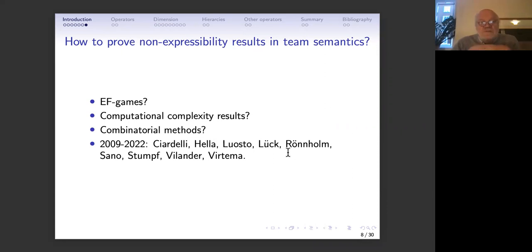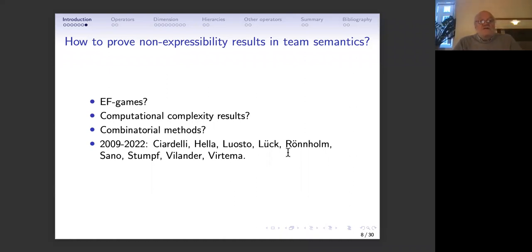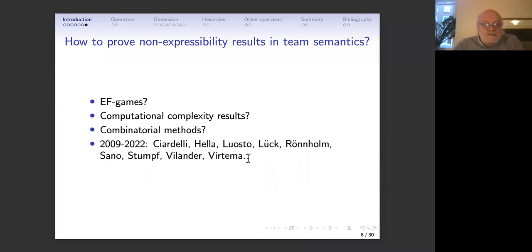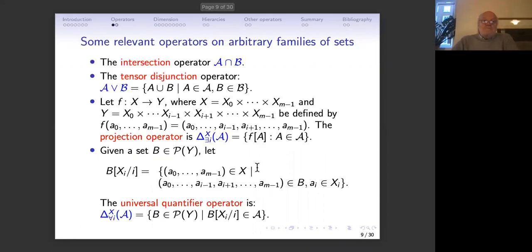The question behind this talk is how to prove non-expressibility results in team semantics. In general, Ehrenfeucht–Fraïssé games tend to be very difficult because we are essentially in second-order situations, so moves are sets or relations — it's a second-order EF game, which is very difficult. Also, computational complexities are known but there are not so many separations in this area and many open problems in computational complexity, so it's not so useful. We try to use combinatorial methods.